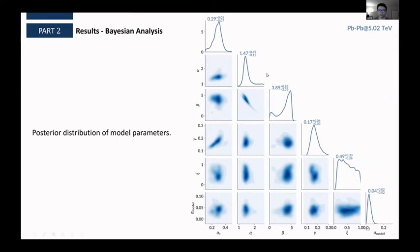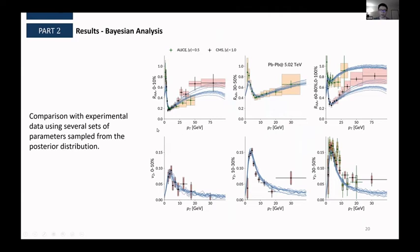And this is the posterior distribution extracted. And you can see very interestingly, the strong coupling constant alpha_s, the extracted value, the mean value is very close to what we had before, around 0.3. And we don't have a very good constraints on the free streaming time. And maybe that's an indication of this parameter being not very important or relevant when predicting the R_AA and v_2 of the D-mesons. So this is again, the comparison with experimental data using sets sampled from the posterior distribution.